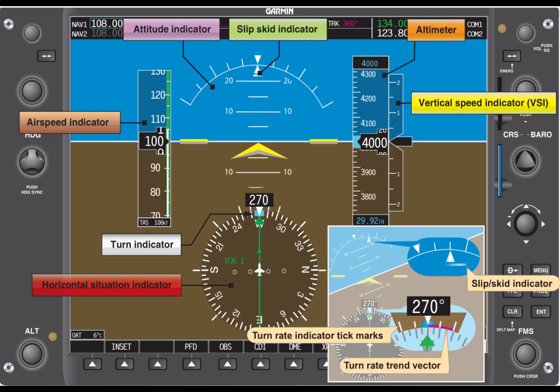So how do all these things work? Let's take a quick look at that. First, we'll take a look at what traditionally would have been the gyroscopic instruments. If you can't remember what those are, those are the attitude indicator, the heading indicator, and the turn indicator.